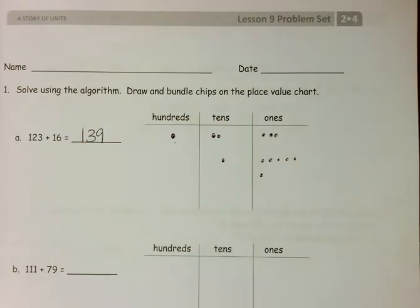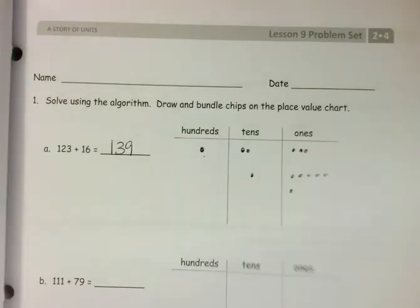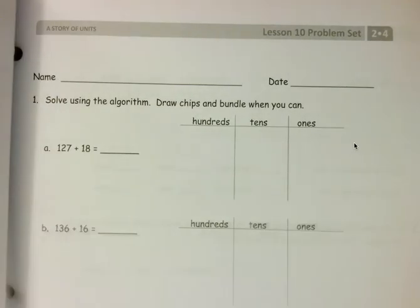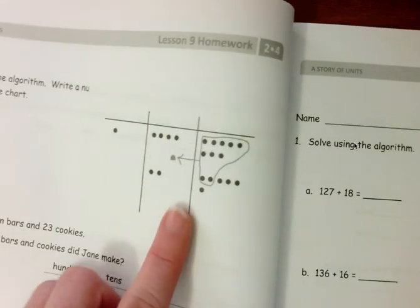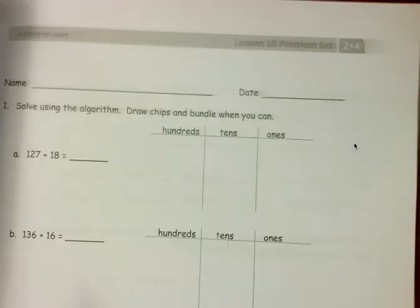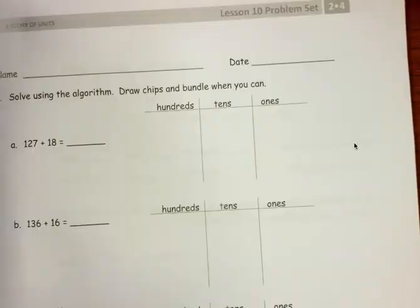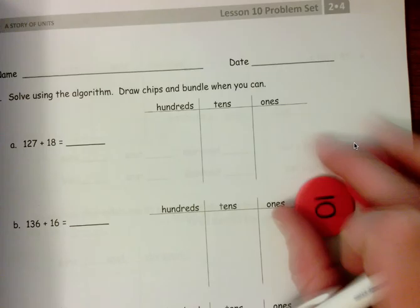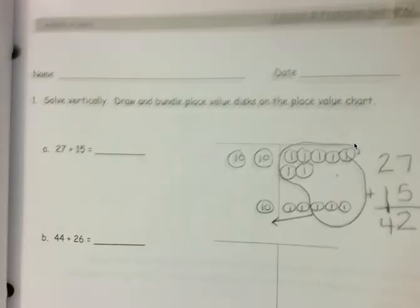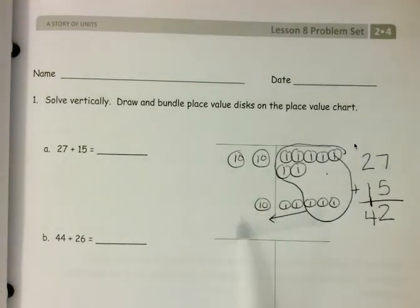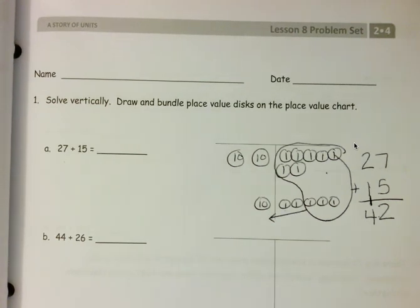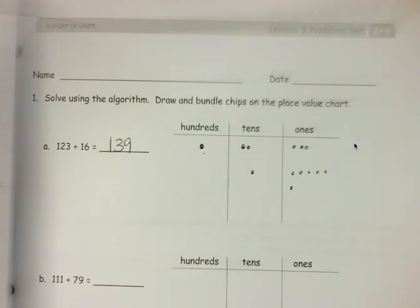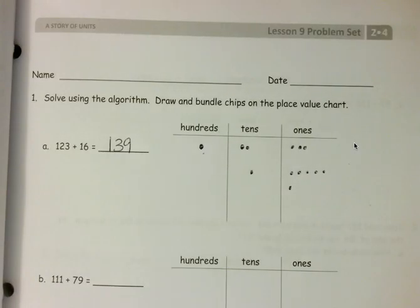Students will continue to practice using this chip model for lesson 10 as well. Feel free to go back and have students use actual place value disks or just pictorially draw out their place value disks, labeling the disks until you think they're ready or until the teacher has let you know that they are successfully and consistently working with the chip model.